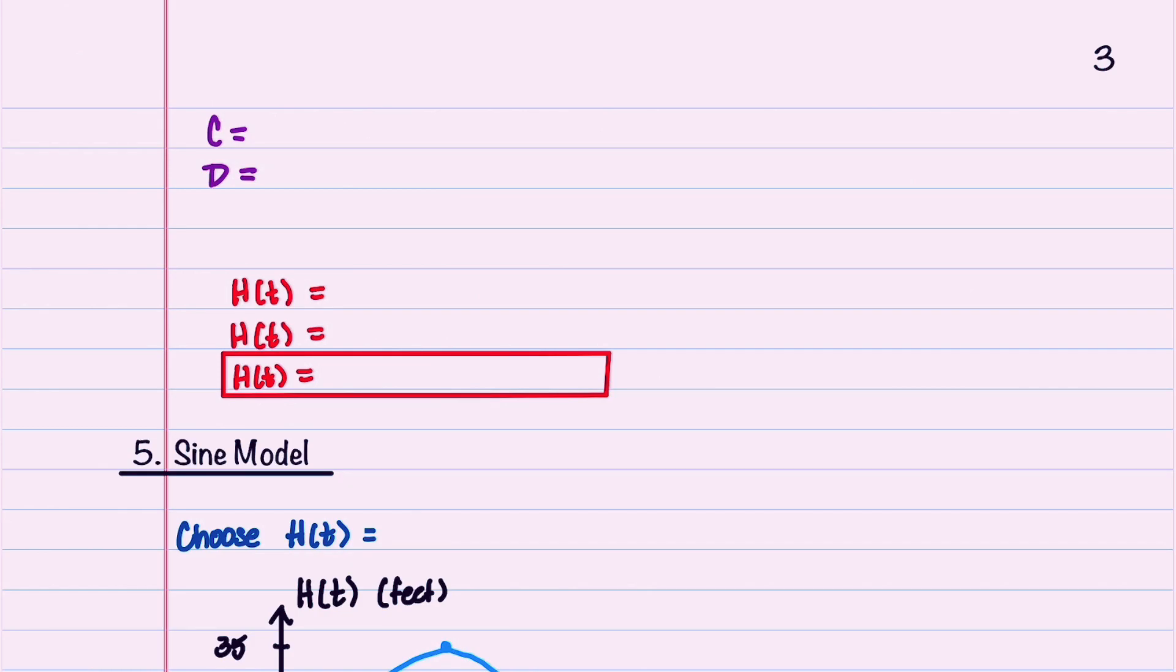Since the graph of cosine t does not need to be shifted to match the graph of h of t, C, which is equal to our phase shift, is going to be 0.